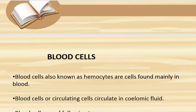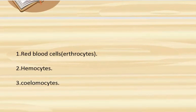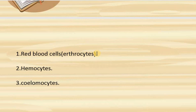Next are blood cells. In invertebrates, there are three types of blood cells: red blood cells (erythrocytes), hemocytes, and coelomocytes. Red blood cells contain a respiratory pigment called hemoglobin, which carries oxygen. Hemocytes exist in two types — some have respiratory pigments and some do not. Those without pigments help in blood clotting, while those with respiratory pigments help transport or absorb oxygen.